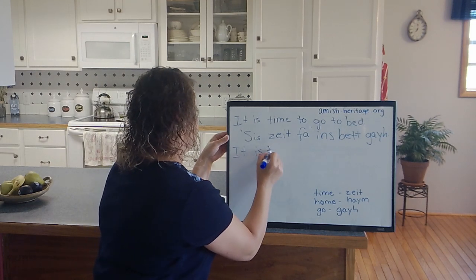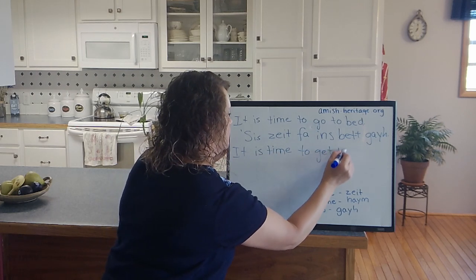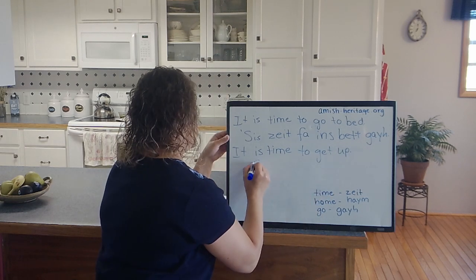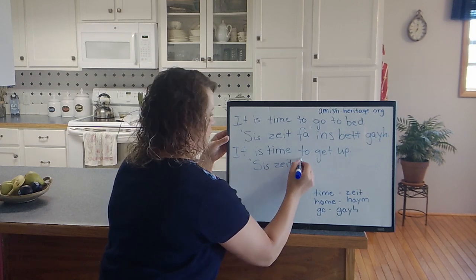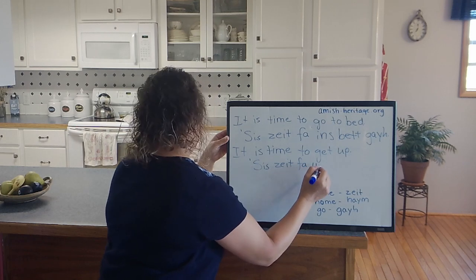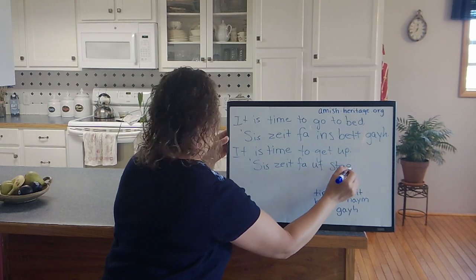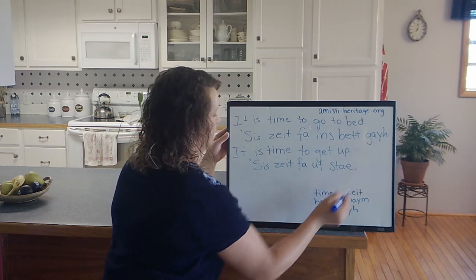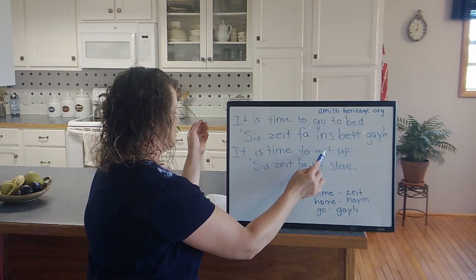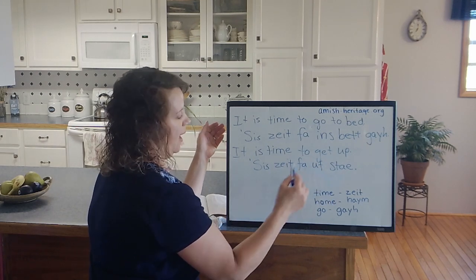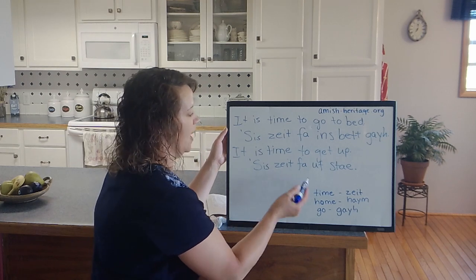It is time to get up would be sis tight fa uff steh. I don't know how does that spell. Steh. Something like that. Sis ta fa uff steh. It could also be translated as time to stand up because steh would be stand, but you're basically saying it's time to get up. Like in the morning if somebody is supposed to get out of bed. It's time to get up, sis ta fa uff steh.